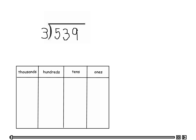Here is problem number two for division with three digits using number discs. We're going to look at the divisor, which will determine how many discs we will have in each group. In this case, we will have three, so let's look at the first number.